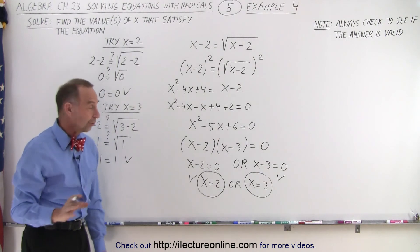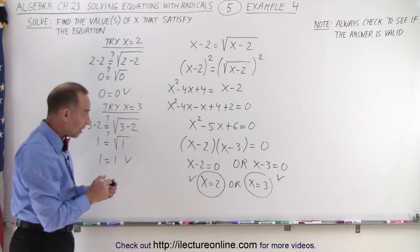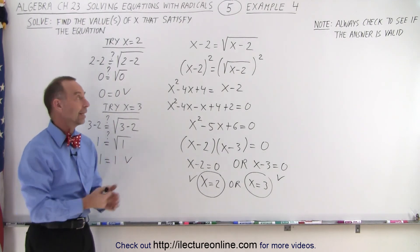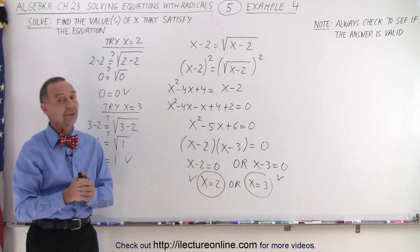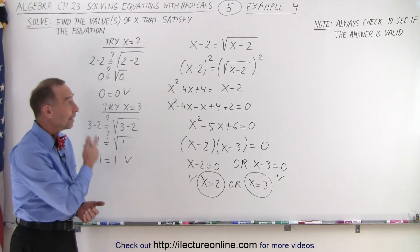That means both of those are actually answers or solutions to our original equation. Either x can be 2 or x can be 3. In either case, the left side will equal the right side. We say it will satisfy the equation. And that is how it's done.